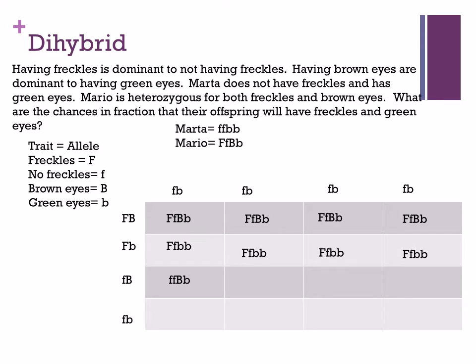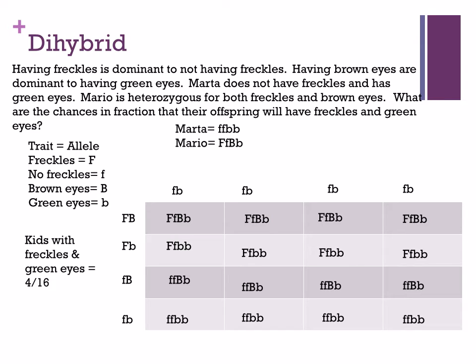For this problem, I'm only asking for the chance in fraction that their offspring will have freckles and green eyes. Since it has freckles, it needs at least one capital F. Since it has green eyes, which is recessive, it should be two lowercase b's. Looking at the dihybrid Punnett square for boxes with one capital F and two lowercase b's, it will be 4 out of 16 boxes.